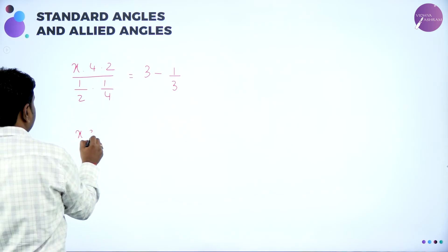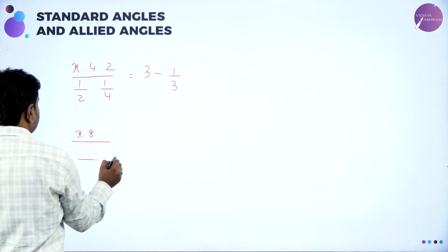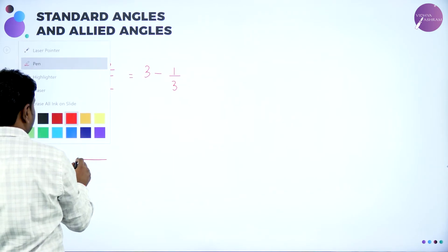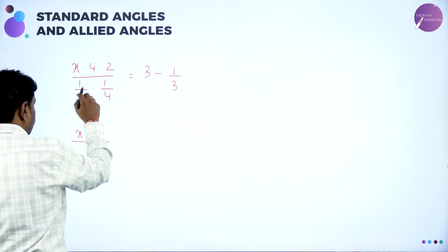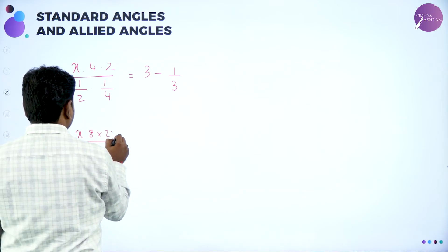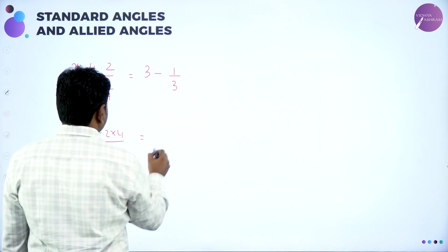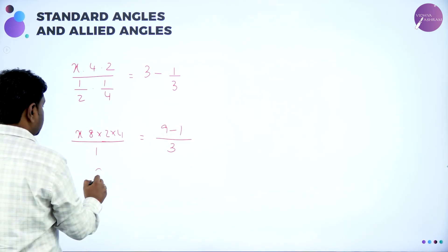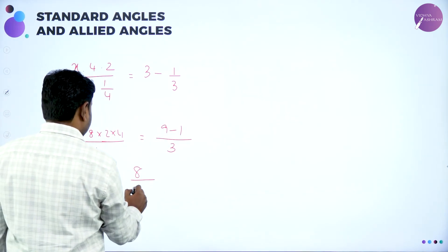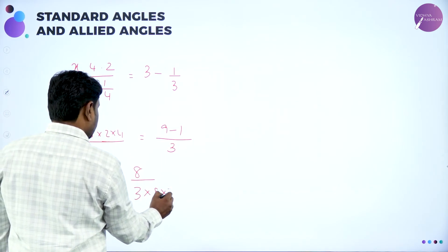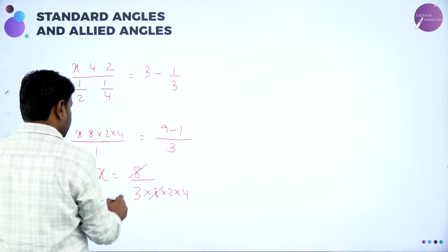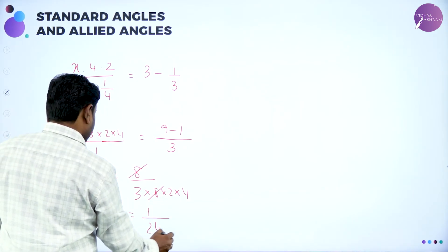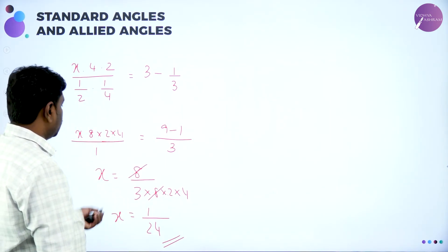Simplify: x · 4 · 2 = 8x. Square and square root of √2 cancel. (1/√2)² = 1/2, (1/2)² = 1/4. (√3)² = 3, (1/√3)² = 1/3. Right side: LCM of denominators gives 9/3 − 1/3 = 8/3. Left side: denominator 2 × 4 goes to numerator. Canceling 8 and 8: x = (1/3) × (1/6×4) = 1/24. So x = 1/24.